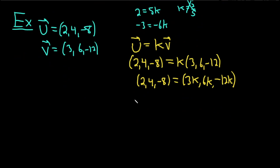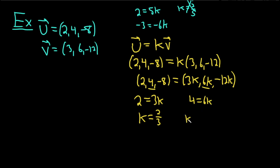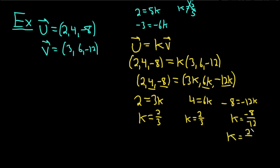Setting the components equal: 2 equals 3k gives k equals 2/3. Then 4 equals 6k gives k equals 4/6, which is the same as 2/3. And negative 8 equals negative 12k gives k equals negative 8 over negative 12 — since 4 goes into 8 twice and into 12 three times with the negatives canceling — which is also 2/3. All three give the same value, so yes, these vectors are dependent.